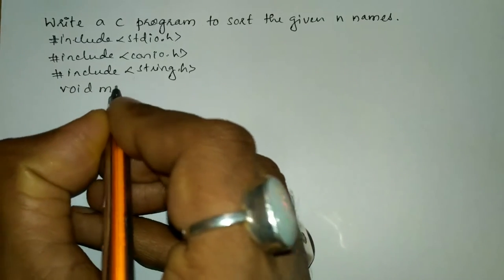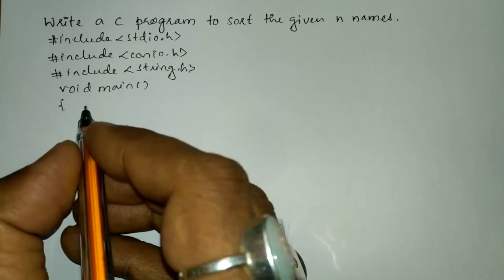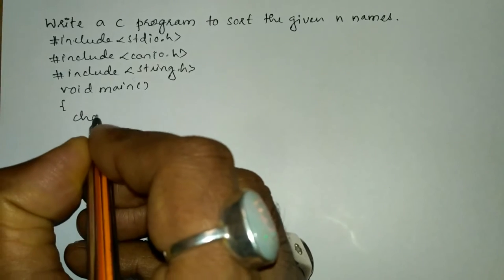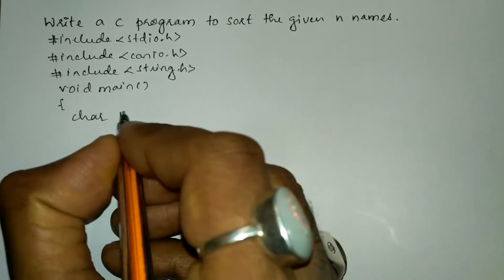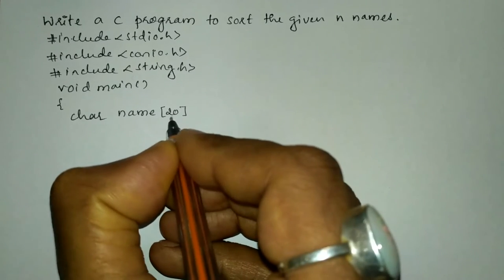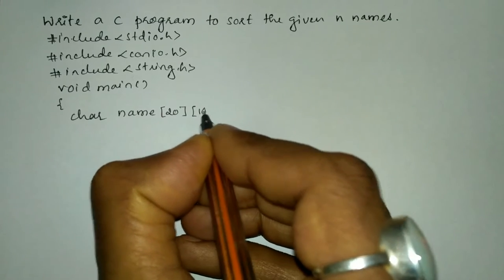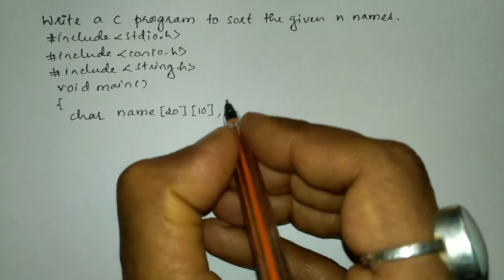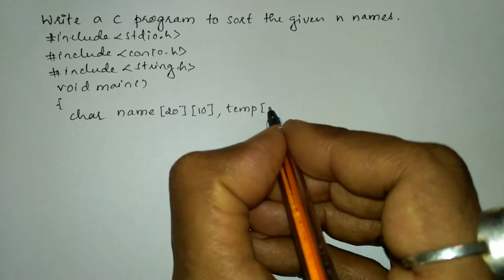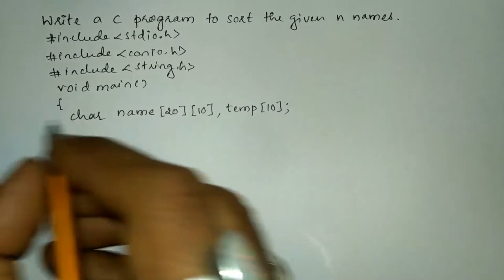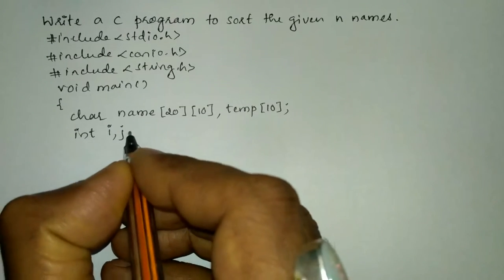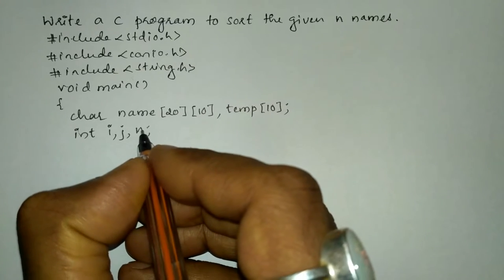Now we will write the main function with curly open brace. Here we are going to declare all the necessary variables. I'll write char type data and declare a two-dimensional array named 'name' with row size 20 and column size 10. Next I'll take one more temporary array of one dimension with size 10, and integer variables i, j, and n which represents the number of names.